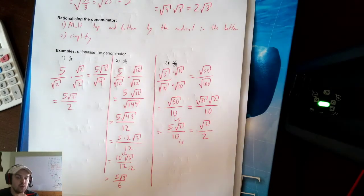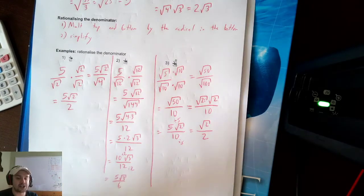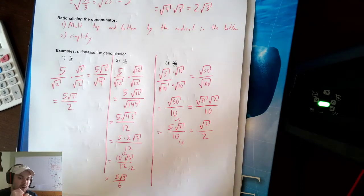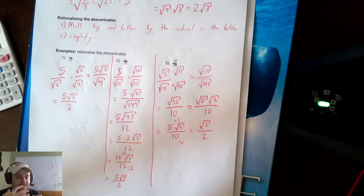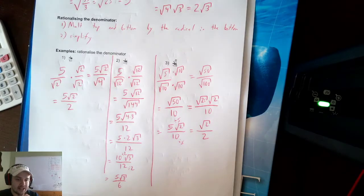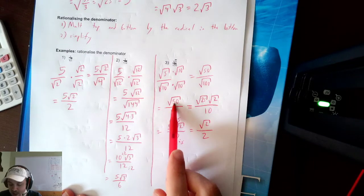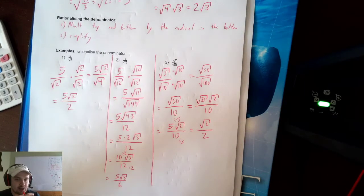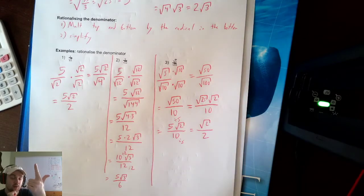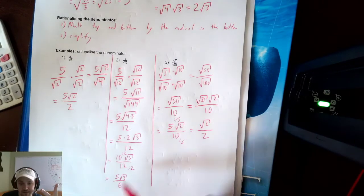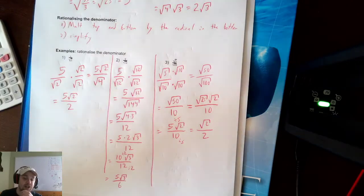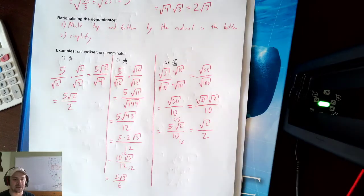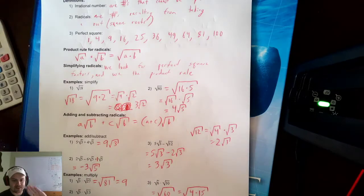To summarize with radicals: first, always rationalize your denominators — your answer is incorrect if you have a square root in the denominator. Second, always reduce by factoring out perfect squares; if the answer is square root of 50, reduce it to 5 square root of 2. Third, reduce any fraction parts at the end. That is how we simplify radicals, and that ends Section 5.4. Thank you all for joining me, and I will see you next time.